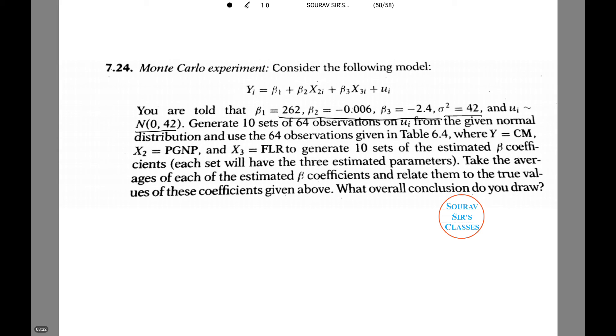Now we generate 10 sets of 64 observations of ui from the given normal distribution and use the 64 observations given in table 6.4, which I am going to show you, where Y equals CM, X2 equals PGNP, and X3 equals FLR to generate 10 sets of estimated beta coefficients.